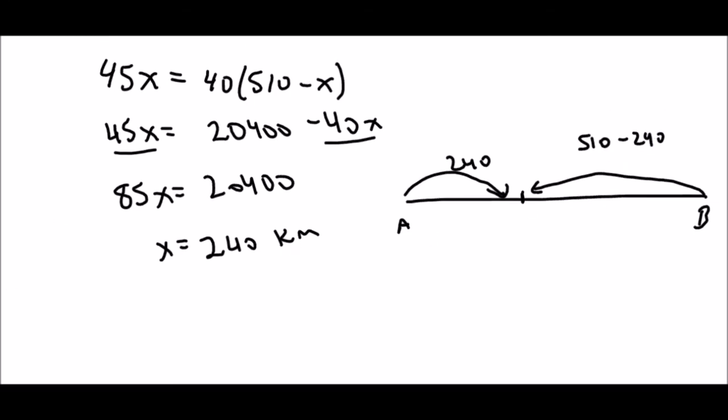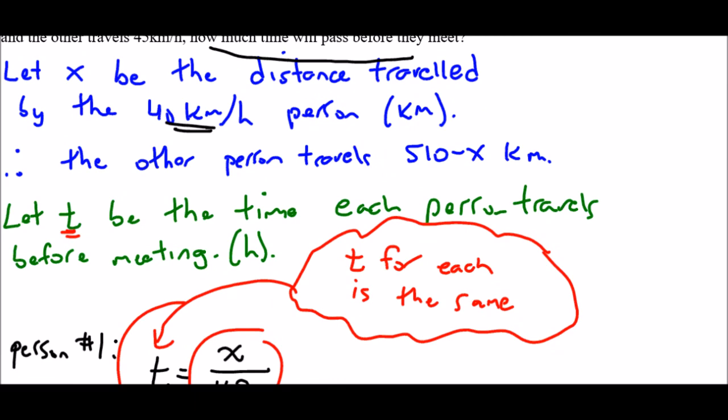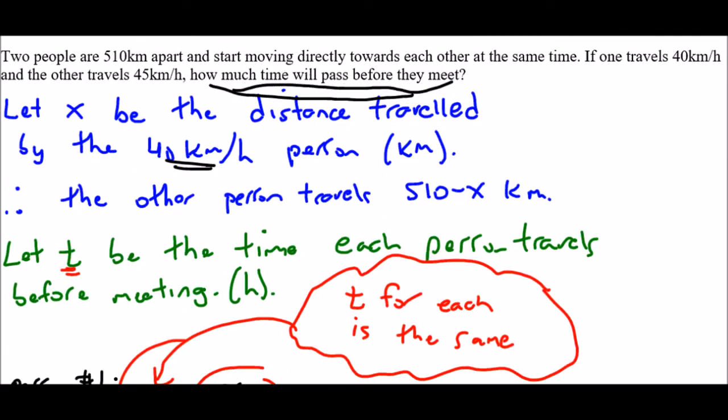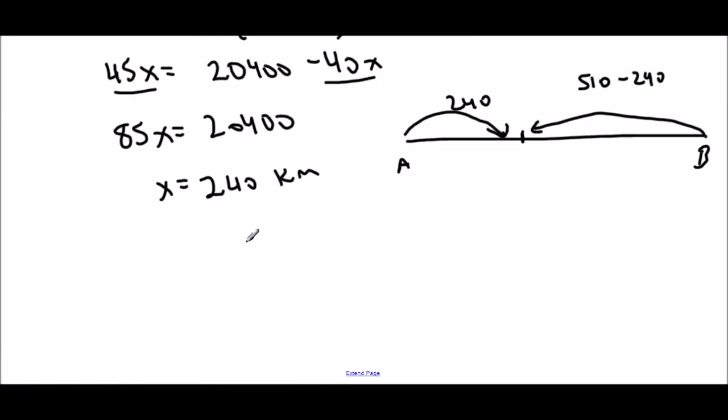But I'm not actually interested in the distance. The question was asking how much time will pass. So now I'm going to use this X value and sub it into one of my equations that has T in it. So for the first person, we said that X was 240 over 40. That means that the time is six hours.